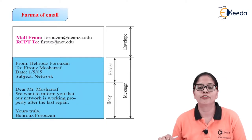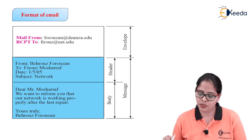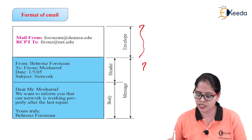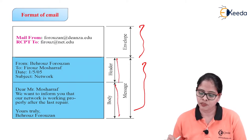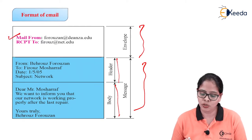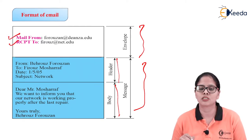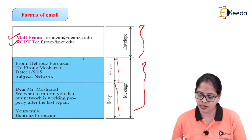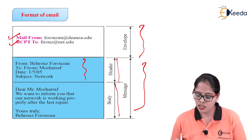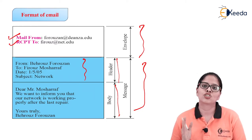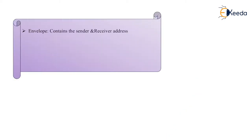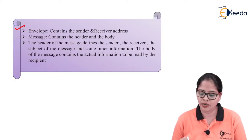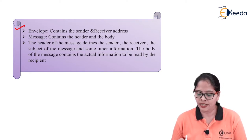Now let us discuss the format of the email. Basically, there is an envelope part and a message part. The message part consists of a header and a body. The envelope contains the sender address and the receiver address. The header contains more detailed information, and the body contains the actual content of the mail. The message contains a header and a body — the envelope contains the sender and receiver address.